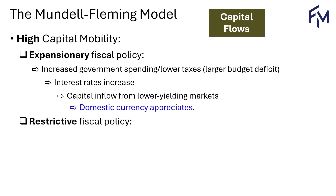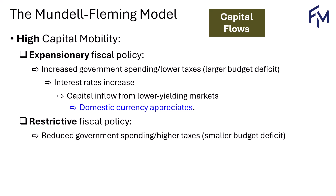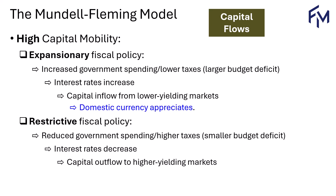With restrictive fiscal policy, there will be reduced government spending or higher taxes, and the budget deficit would shrink. The government would have less issuance of bonds and interest rates fall, prompting capital to flow out toward higher-yielding markets abroad. This leads to a depreciation of the domestic currency.